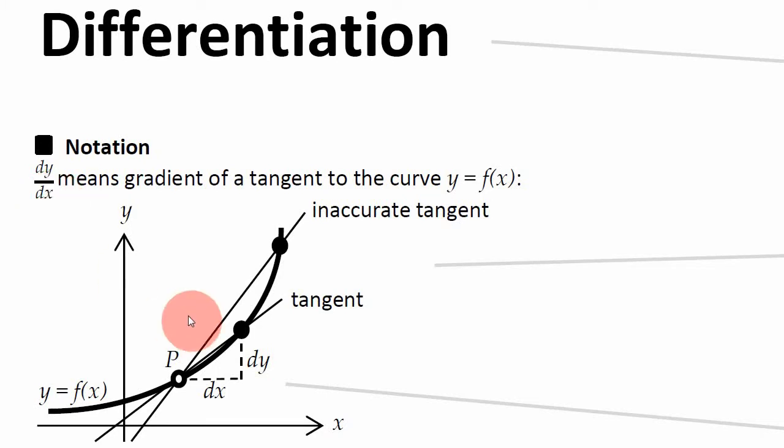I want to do an experiment to find out what's the best way to find a gradient at this point P on my curvy line. It's some general random line which has the equation y equals f(x). Now the way you're supposed to find the steepness on a curvy line is by drawing an accurate tangent. A tangent is simply a straight line which just touches your curvy graph at that point.